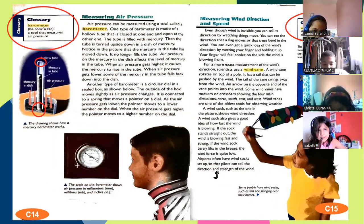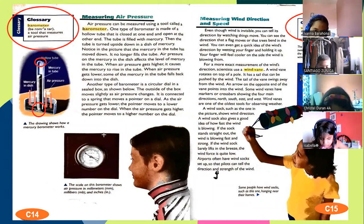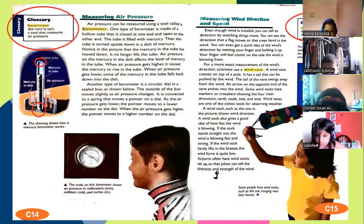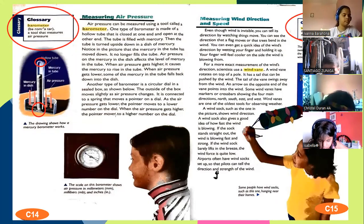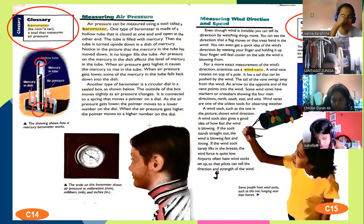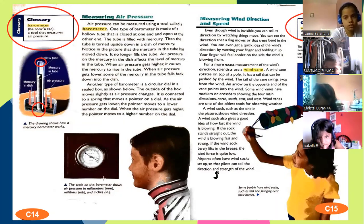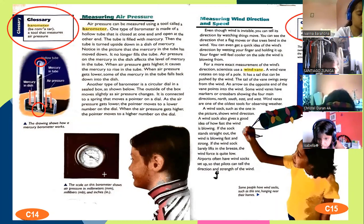Another type of barometer has this circular dial in a sealed box. The outside of the box moves slightly as air pressure changes. It is connected to a spring. Un spring es un resorte. It is connected to a spring that moves a pointer, a pointer es como una aguja, on a dial. As the air pressure gets lower, the pointer moves to a lower number on the dial. When the air pressure gets higher, the pointer moves to a higher number on the dial. This one measures air pressure. These two tools measure air pressure. There are two different kinds of barometers.